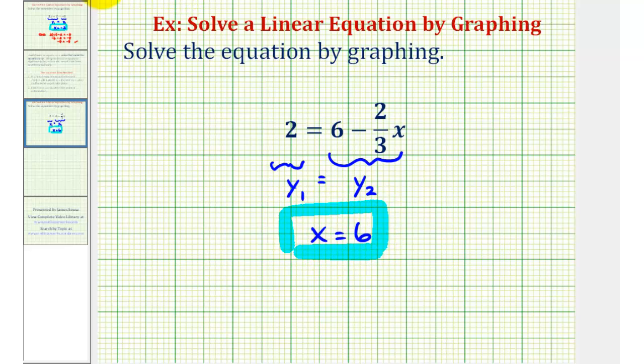And again, let's go ahead and check this algebraically by substituting 6 for x. So we would have 2 equals 6 minus 2 thirds times 6, which I'll write as 6 over 1. So we have 2 equals 6 minus this product.